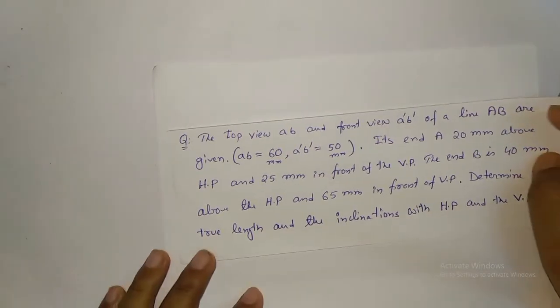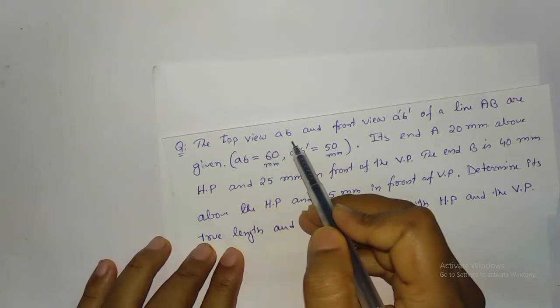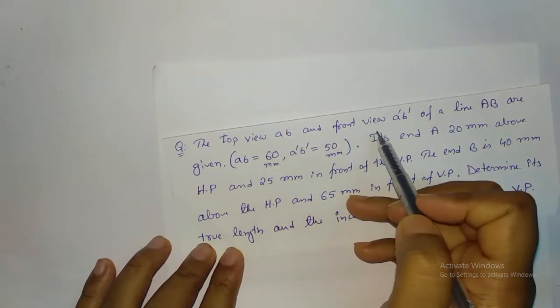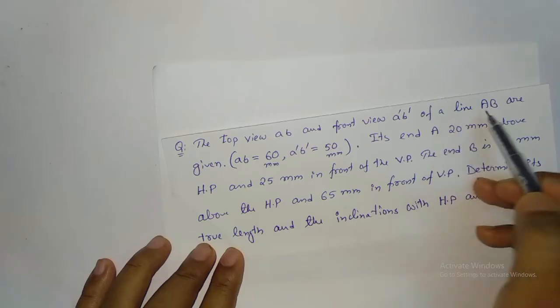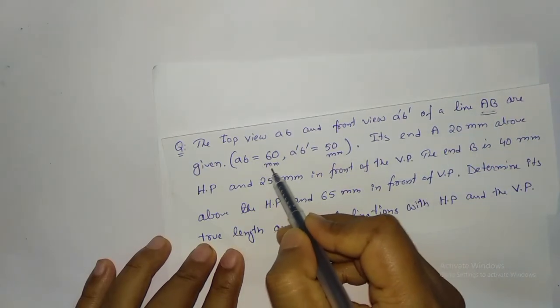Hello viewers. In this video I am going to start with an example for determination of true length and inclination. Based on this question, the top view AB and front view A-dash B-dash of line AB are given. The top view measurement is 60mm and the front view is 50mm.